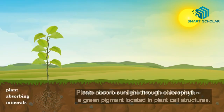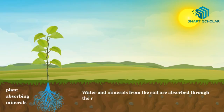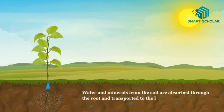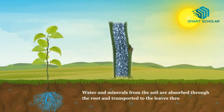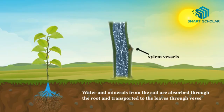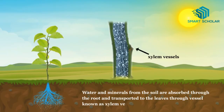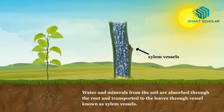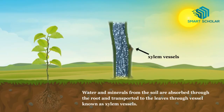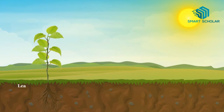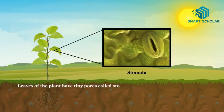Water and minerals from the soil are absorbed through the root and transported to the leaves through vessels known as xylem vessels.